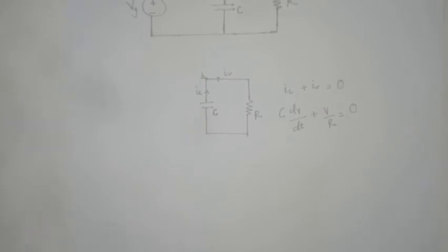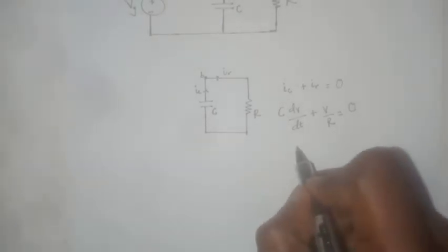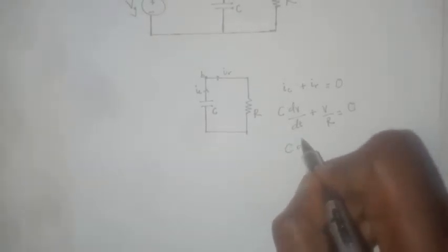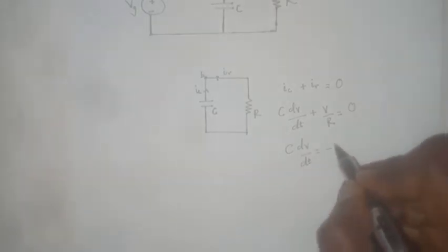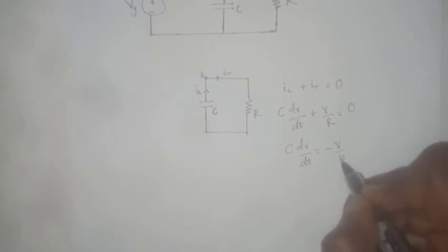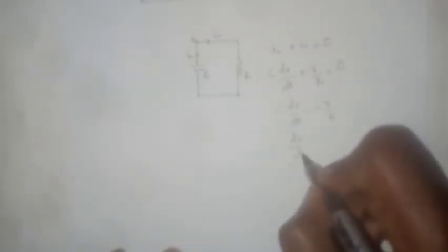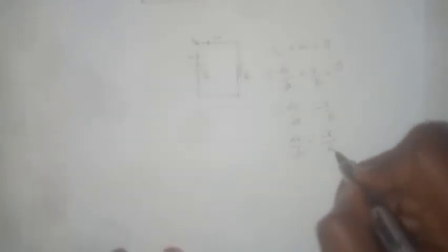This gives us a first-order differential equation, which is characteristic of a first-order circuit. To simplify further, we can say that C·dV/dt equals minus V over R, and dividing through gives us C·dV/dt equals minus V over RC.